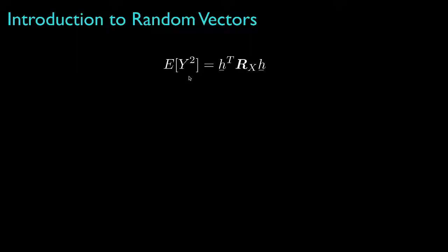Because the second moment for a random variable must be non-negative, this quadratic form for the correlation matrix must also be non-negative for any possible vector H. This means that the correlation matrix must be non-negative definite. That is, the quadratic form with any vector H, H transpose times the correlation matrix times H, must always be greater than or equal to zero.